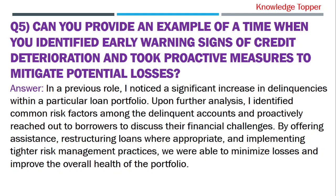Question number five: can you provide an example of a time when you identified early warning signs of credit deterioration and took proactive measures to mitigate potential losses? The purpose of this question is that the interviewer wants to assess your ability to recognize and respond to signs of credit deterioration to protect the lender's interests. In a previous role, I noticed a significant increase in delinquencies within a particular loan portfolio. Upon further analysis, I identified common risk factors among the delinquent accounts and proactively reached out to borrowers to discuss their financial challenges. By offering assistance, restructuring loans where appropriate, and implementing tighter risk management practices, we were able to minimize losses and improve the overall health of the portfolio.